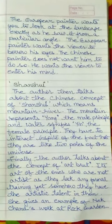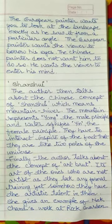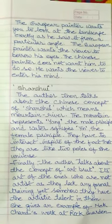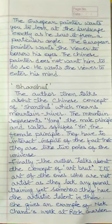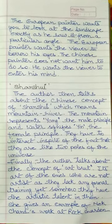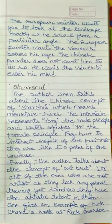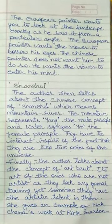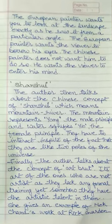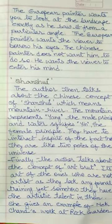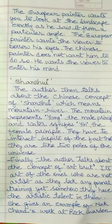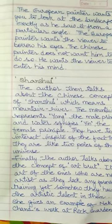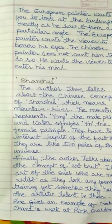They have to interact in spite of the fact that they are like two poles of the universe. In Indian culture, yin, which is the receptive and female part, and yang, which is the masculine and male part, are known as maya and brahma. Nature is the yin, and God is the creator of the universe.